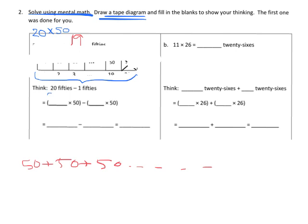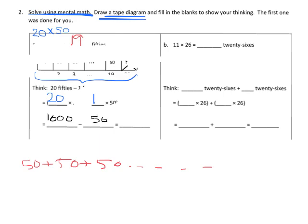So we've got 20 times 50, but since we only need 19, we're going to have to subtract 1 times 50 — we subtract an extra 50 because we multiplied 20 times 50 instead of 19 times 50. We can do the math easily in our head: 20 times 50 is 1,000, and 1 times 50 is 50, so 1,000 minus 50 is 950.